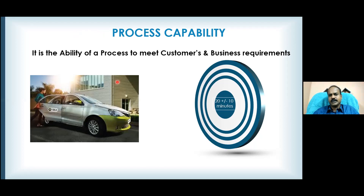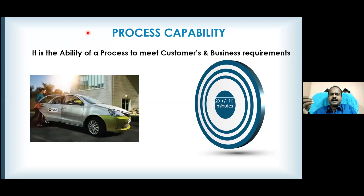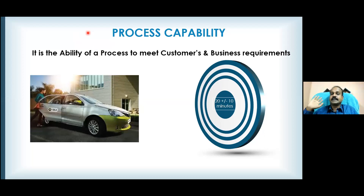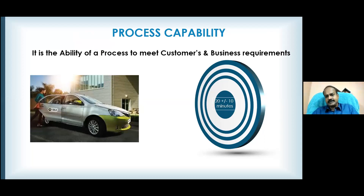When customer expectation is 30 minutes, customers are ready to accept up to that point. Beyond 30 minutes, some customers might wait an extra 10 minutes, some might wait 5 minutes, and somebody might cancel right after 30 minutes — even if the car comes, they'll send it back. So rejections are possible beyond a certain point. As a service provider, I'm going to target sending the car within 20 minutes, with a maximum of 30 minutes to reach the customer.